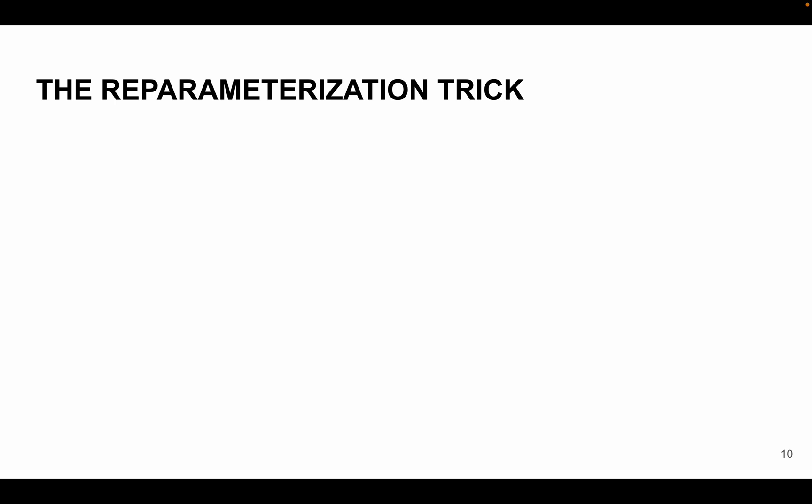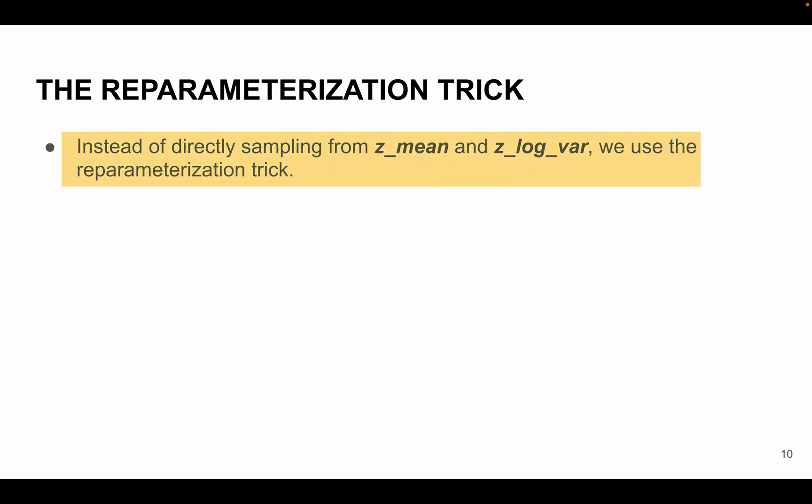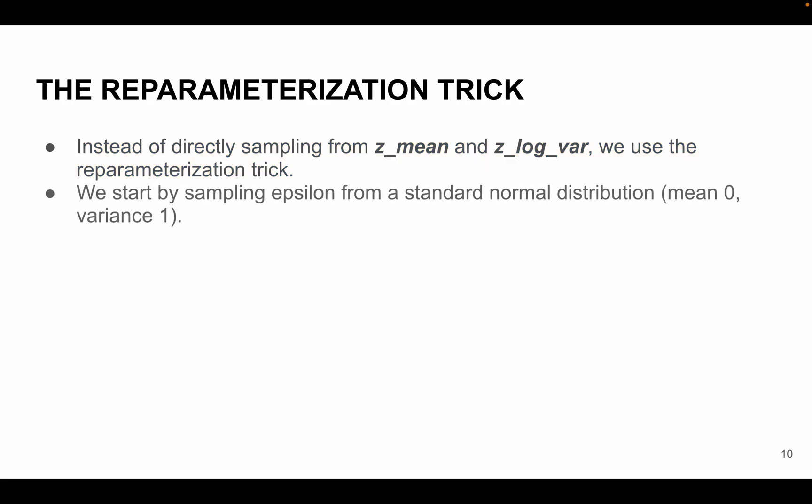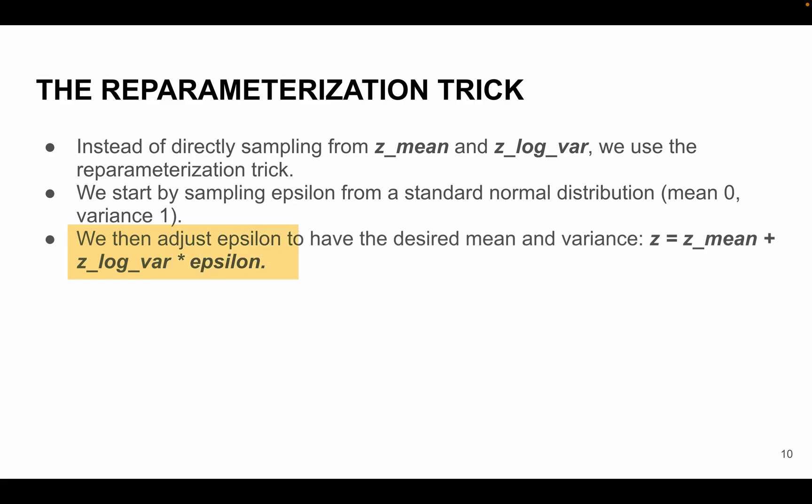Now this is a bonus slide and I want you all to know about something called the reparameterization trick. Rather than directly sampling from our normal distribution with parameters z_mean and z_log_var, we take a different approach. Now we first start by sampling a random value epsilon from a standard distribution with mean 0 and variance as 1. Then what we do is we adjust this sample manually to have the desired mean and variance using the formula z = z_mean + z_log_var × epsilon that we have already seen.